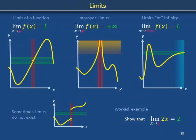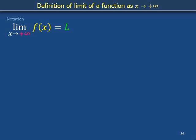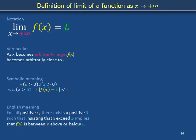We just looked at a limiting process involving moving through arbitrarily large numbers in the vertical direction. Next, we look at limits at infinity, which refer to a limiting process that involves moving through arbitrarily large numbers in the horizontal direction. The notation reads: the limit as x goes to infinity of f of x equals l, roughly meaning that as x becomes arbitrarily large, f of x becomes arbitrarily close to l. The shorthand symbols and unpacked English are synonymous: for all positive epsilon, there exists a positive s such that insisting that x exceed s implies that f of x is between epsilon above or below l.